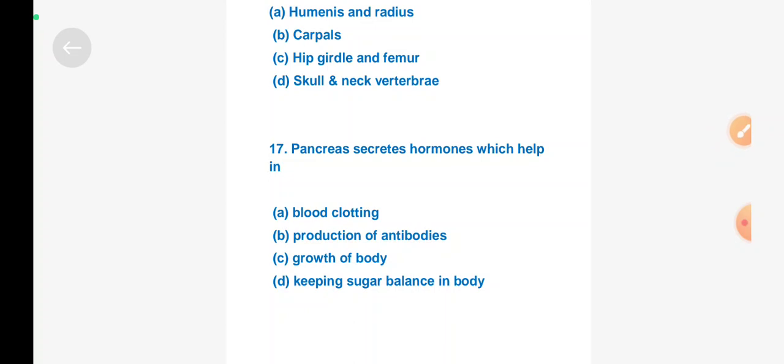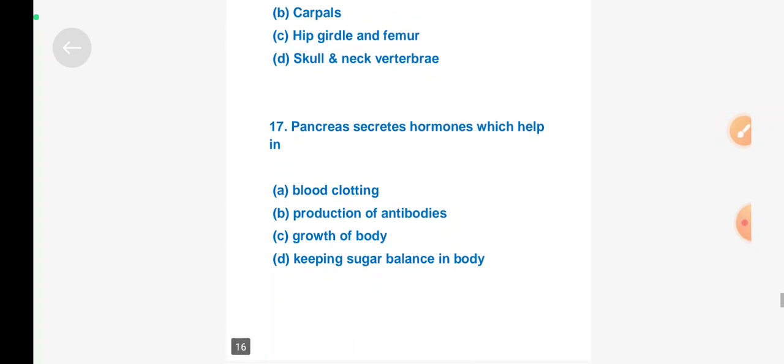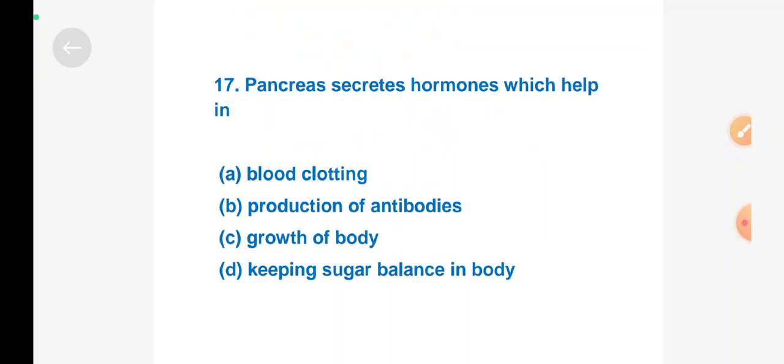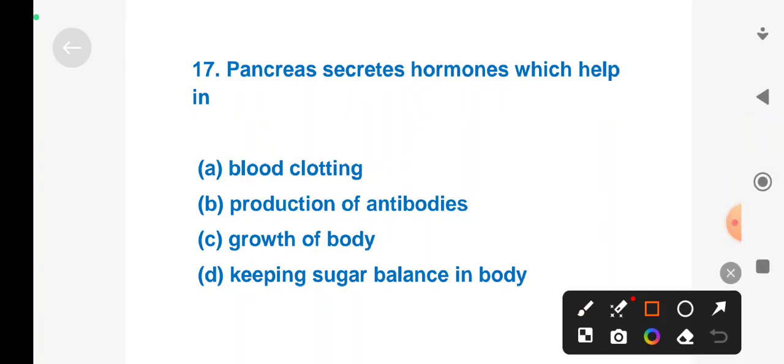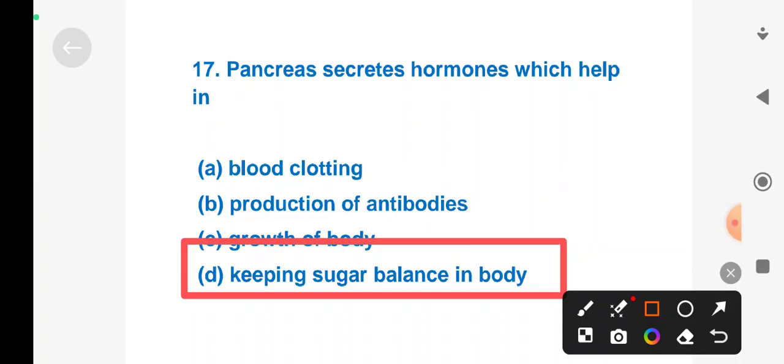Question about functions: Option A: blood clotting, Option B: production of antibodies, Option C: growth of body, Option D: keeping sugar balance in body. Right answer is Option D, keeping sugar balance in body.